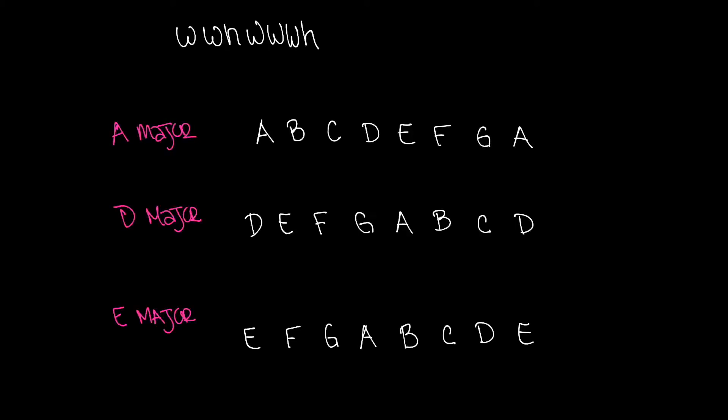In previous videos we looked at how to build the major scale, covering C major and G major. In this video, we'll run through more examples. The first rule to remember is we have to build our skeleton — I've already built the skeletons below to save us a little time.